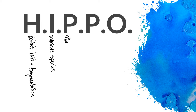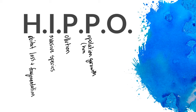The two P's stand for pollution and population growth — and this population growth refers specifically to humans. And then O is for over-harvesting.